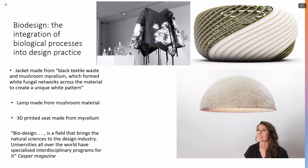These are examples of where the genetic resource actually is responsible for the appearance of the item. This jacket is made from black textile waste and mushroom mycelium, which formed a white fungal network across the material to create a unique white pattern. That could be protected — that pattern could be protected — and it only exists because the fungus grew in that particular formation. Here is a lamp made from mushroom material, and this beautiful 3D-printed seat made from mushroom material — biodesign.